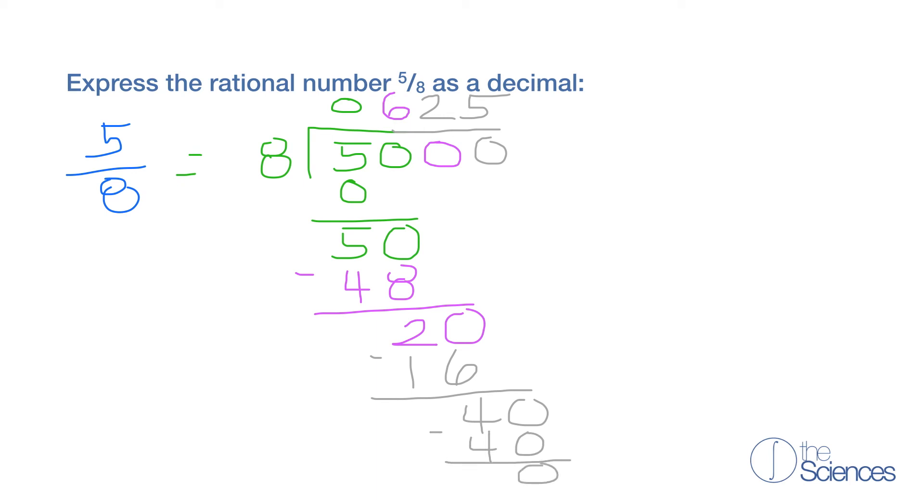So now we started with 5 divided by 8. So we need to write our decimal point and carry our decimal up. So now 5 eighths as a decimal is 0.625.